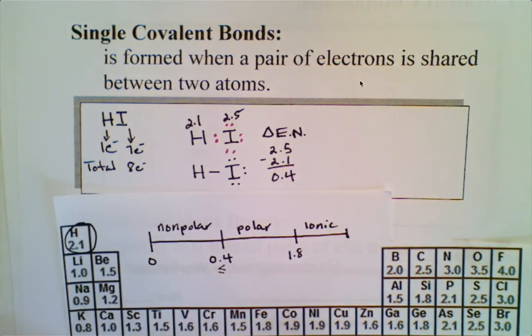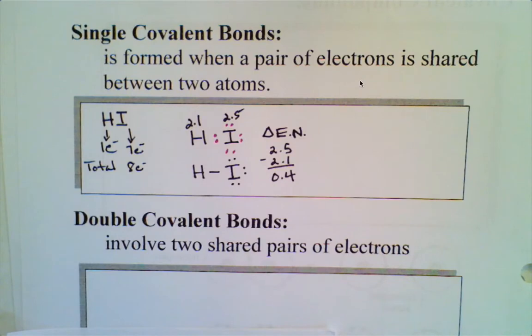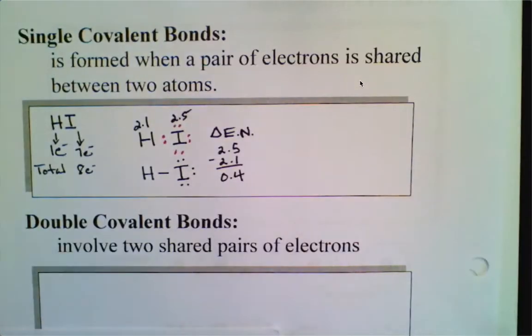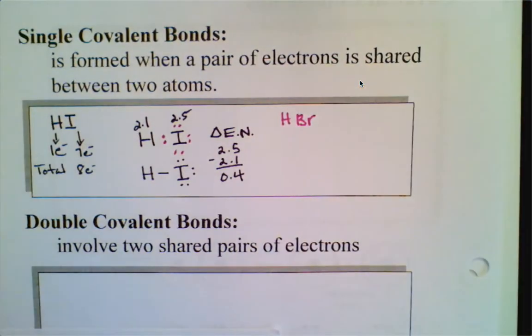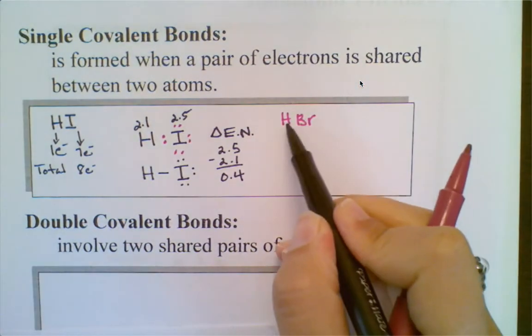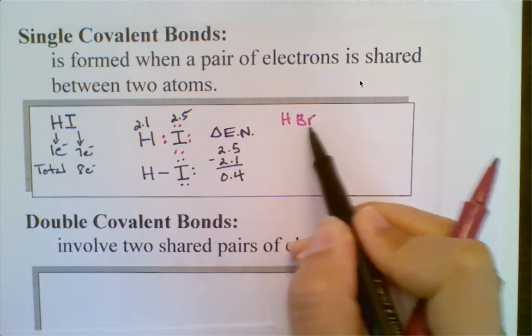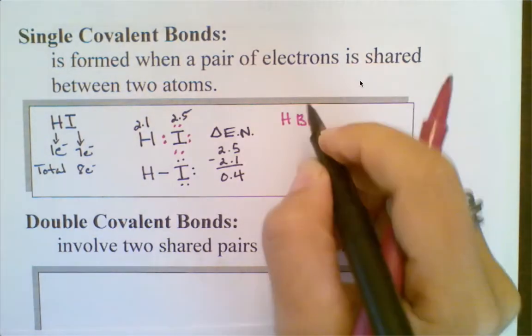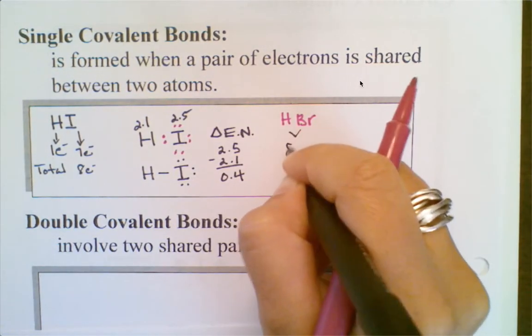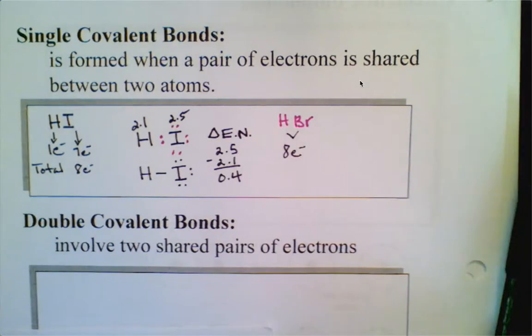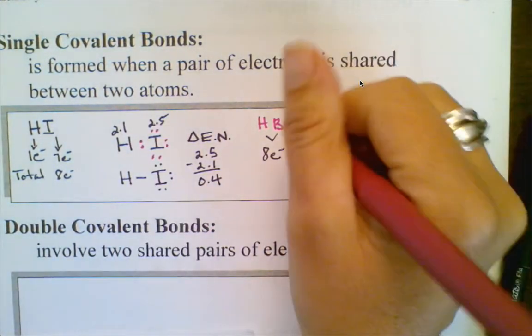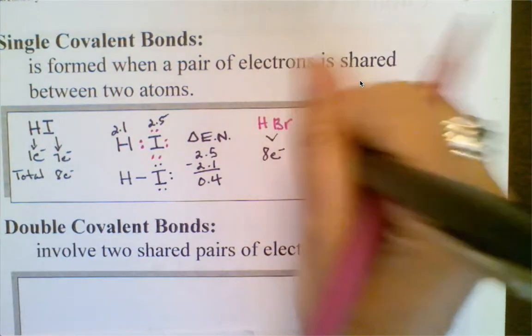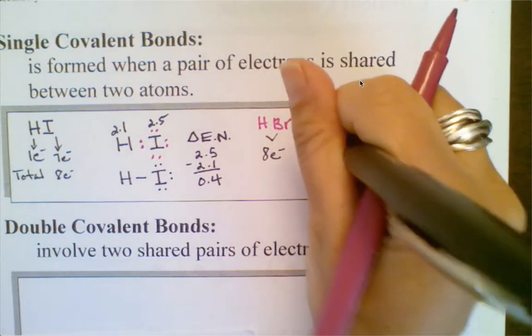Let's do another one. Let's do hydrogen bromide HBr. Again, we will see because hydrogen is from the alkali family and bromine from the halogen family, I have a total of 8 electrons to work with. In this case it will look very similar to hydrogen iodide, the only difference being the polarity of the two.